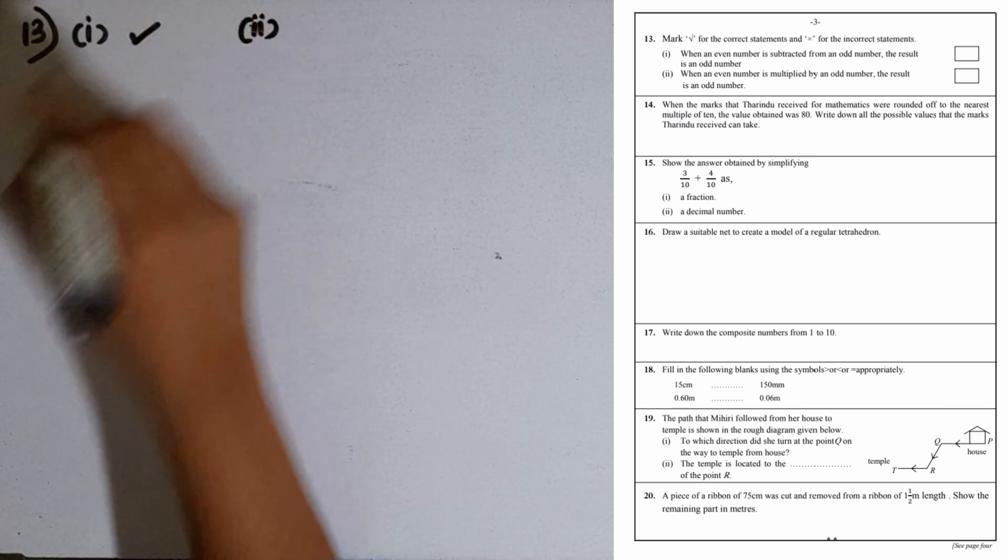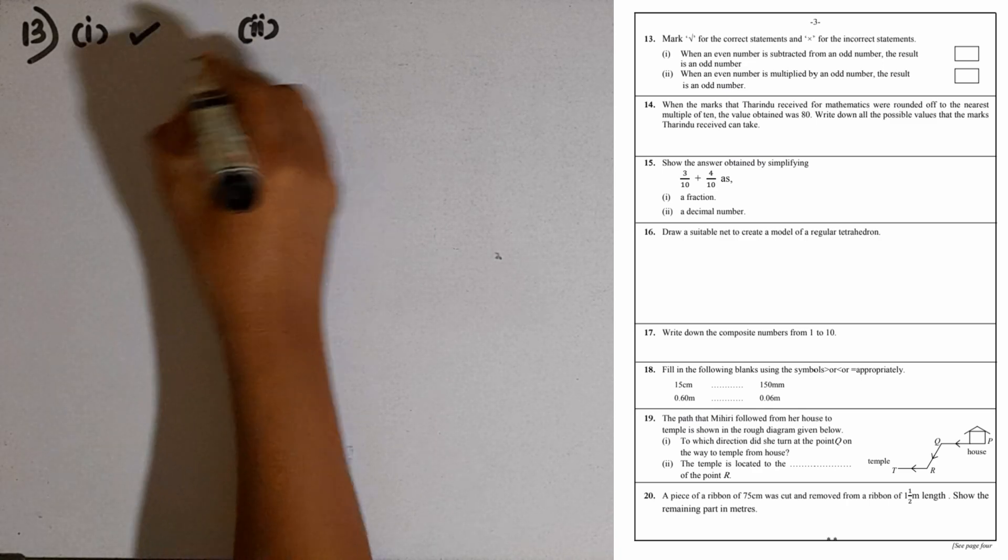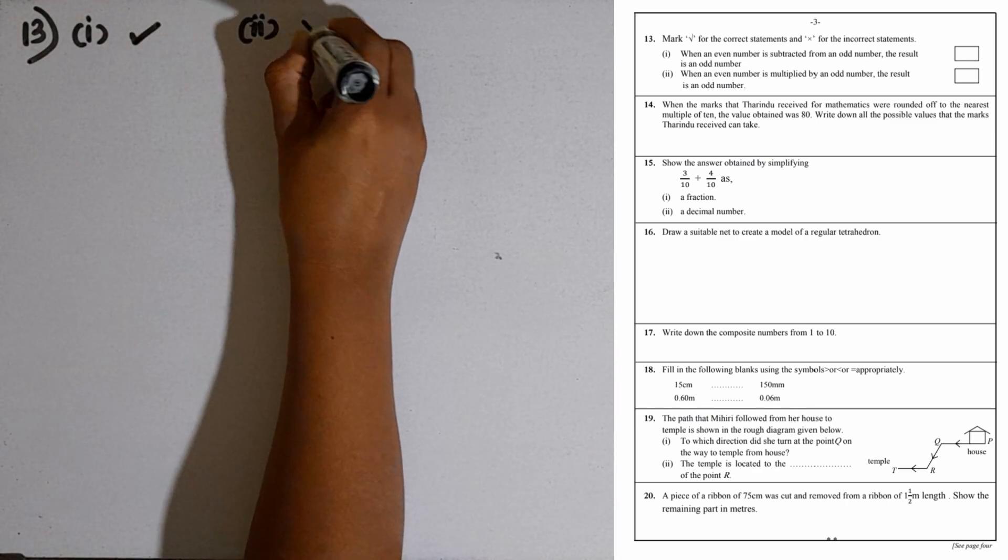Second part: When an even number is multiplied by an odd number, the result is an odd number. Even number 2, odd number 5. 2 times 5 is 10. That is an even number. So this statement is incorrect.